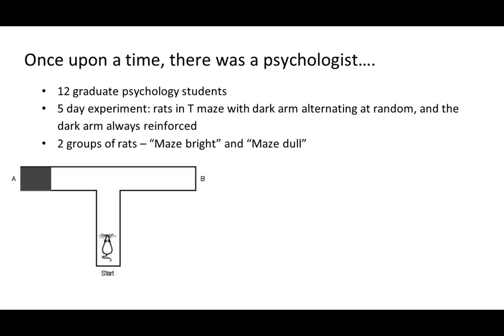Now I'm going to tell you about a psychologist who wanted to do a five-day experiment in rats using an elevated T-maze. An elevated T-maze is very simple: there's a dark arm and a bright arm. In this case, the dark arm was always reinforced with food. You start the rat and time how long it takes them to find the food. He gave 12 graduate students in psychology two groups of rats — maze bright and maze dull.